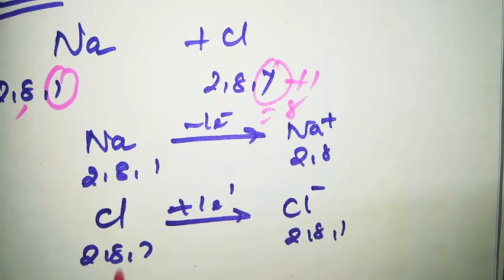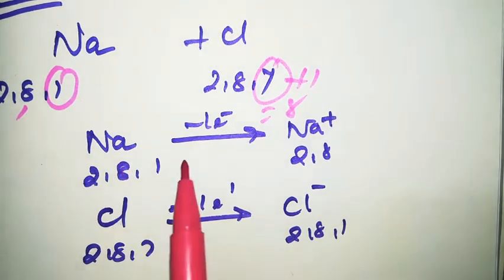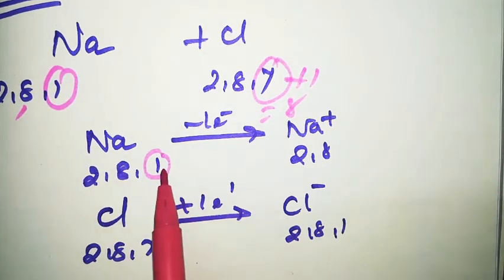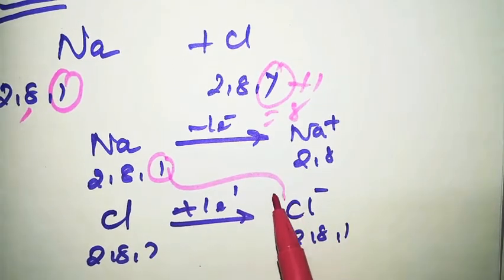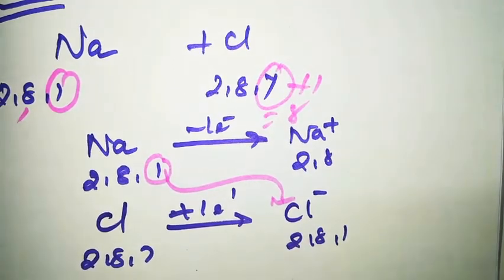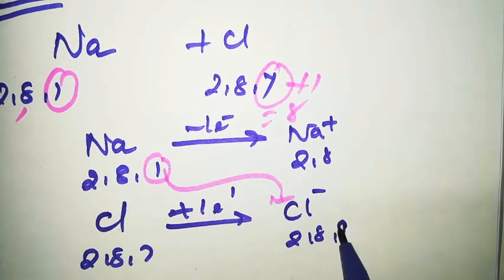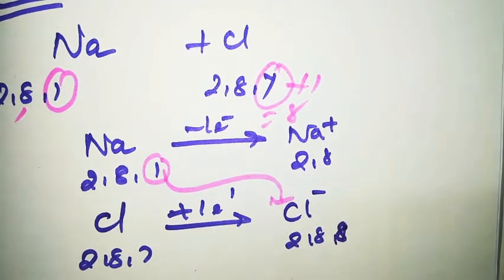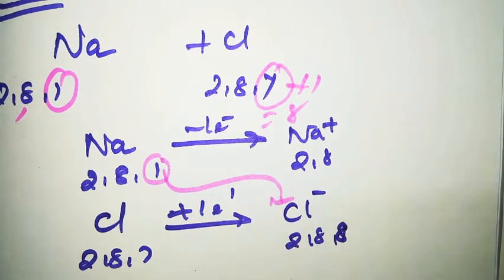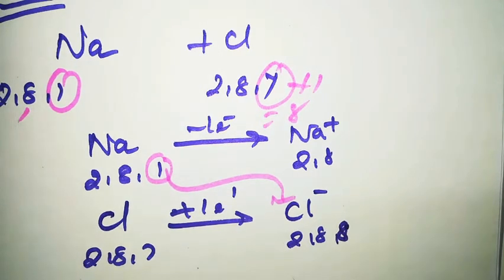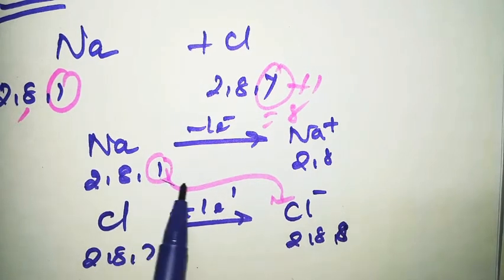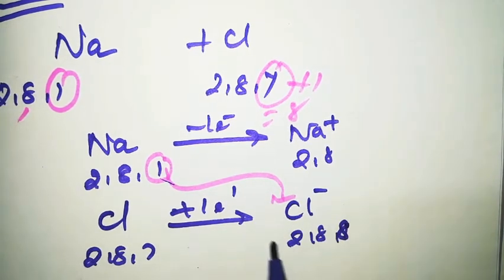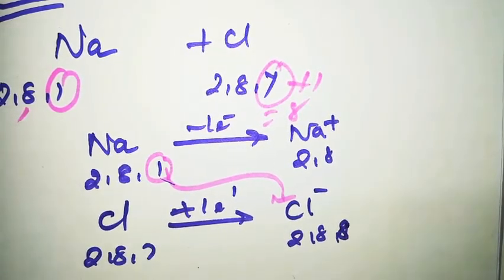Now what will happen: the metal loses one electron from its outer shell, and that electron goes to the outer shell of the chlorine atom. What type of bond is formed? An ionic bond. Ionic bond means transfer of electrons - one electron goes to the outer shell orbital of the chlorine atom. This is how a metal reacts with a non-metal.